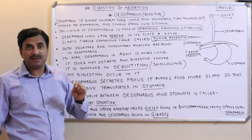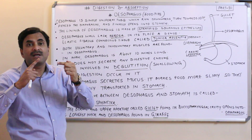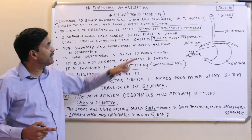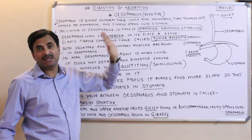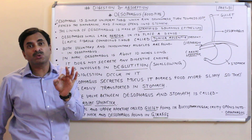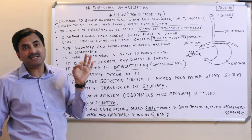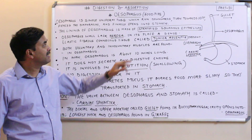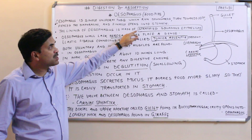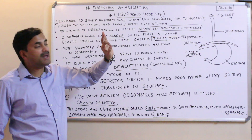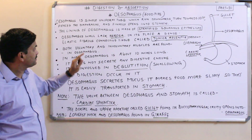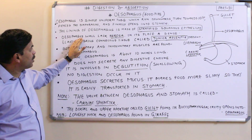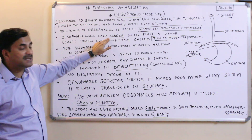The esophagus is lined by an epithelium called stratified squamous epithelium. If somebody asks which epithelium lines the esophagus, the answer is stratified squamous epithelium. The wall of the esophagus lacks the serosa.